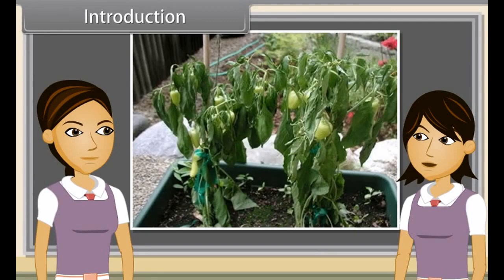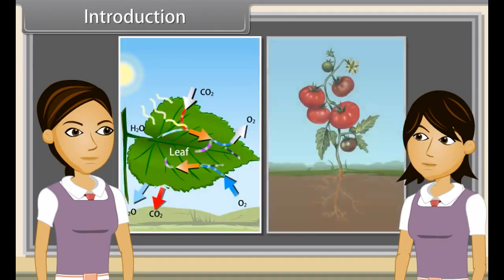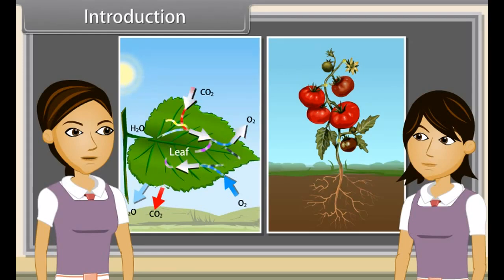We all know that all plants need water. The wilted leaves recover when a plant is added to the soil, which means that water has been conducted upwards into the leaves. We have also learned that leaves need water for photosynthesis. Likewise, the food produced in the leaves has to be transported to other parts of the plant, including the stem, the roots, flowers and fruits. All this transportation is the function of conducting tissues.